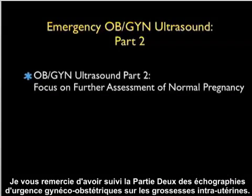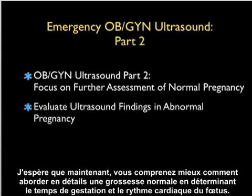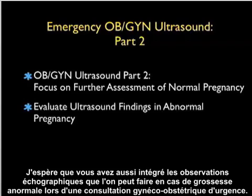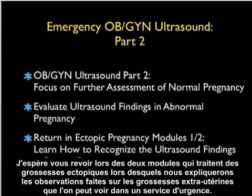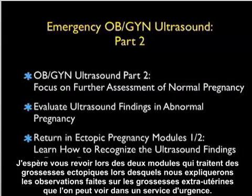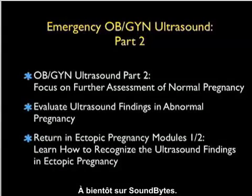Thanks for tuning in to part two of emergency OBGYN ultrasound focusing on intrauterine pregnancy. Hopefully you now have a better understanding of how to further assess a normal pregnancy by determining gestational age and fetal heart rate. I hope I've also been able to give you some of the ultrasound findings you may see in the abnormal pregnancy to know when you need to get an OBGYN consultation in the ED. I hope to see you back as we move on to ectopic pregnancy in two modules, where we'll discuss the various findings of ectopic pregnancies in the emergency department.